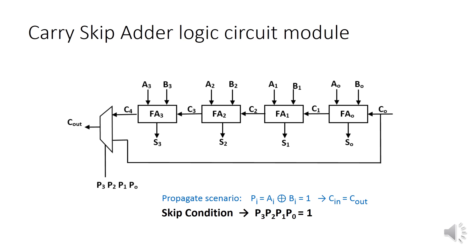Note that if the propagate condition P is not equal to 1, that means that the carry has been deleted somewhere in between the chain. And therefore, you have to wait for the ripple chain to generate the carry. So in this case you cannot take the bypass and you have to proceed slowly, step by step.